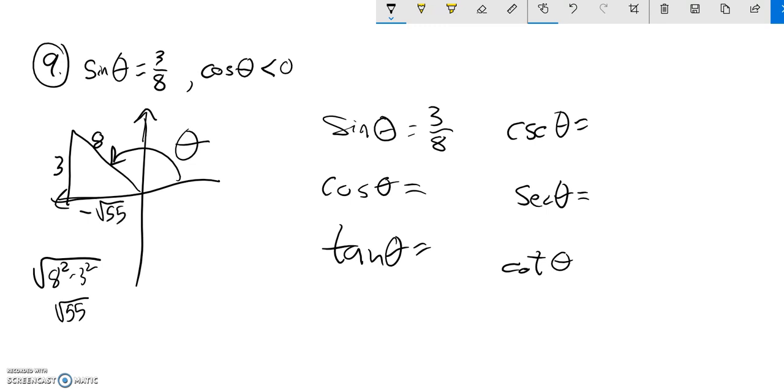So cosine is x over r, that width, which is negative square root of 55 over 8.